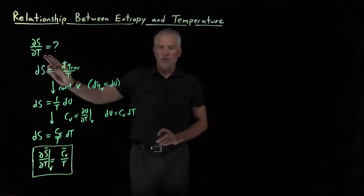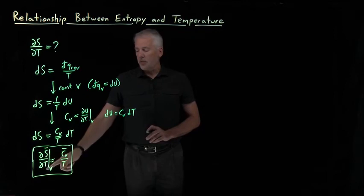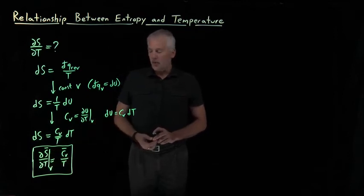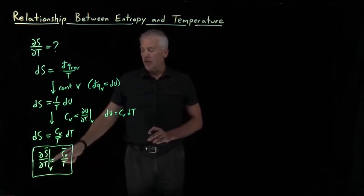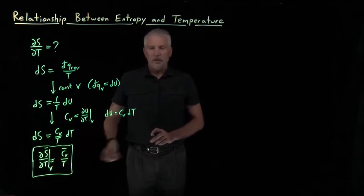And that tells us what we're interested in. At least if we're interested in a process at constant volume, it tells us how quickly the entropy is changing as we heat up or cool down the system as we change its temperature. That rate of change of the entropy with temperature is heat capacity divided by temperature.